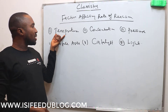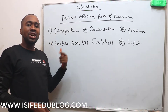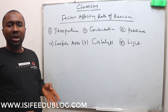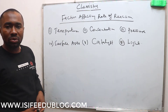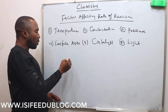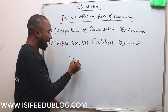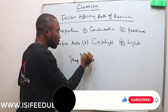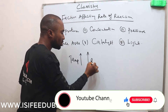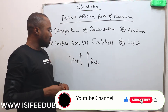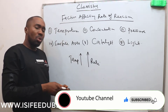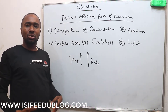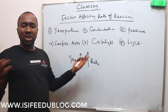Number one is temperature. An increase in temperature leads to an increase in the rate of chemical reaction. In other words, once the temperature is high, the rate of the reaction will also be high. The reason is because when you increase temperature, the average kinetic energy of the reactant particles will also increase.